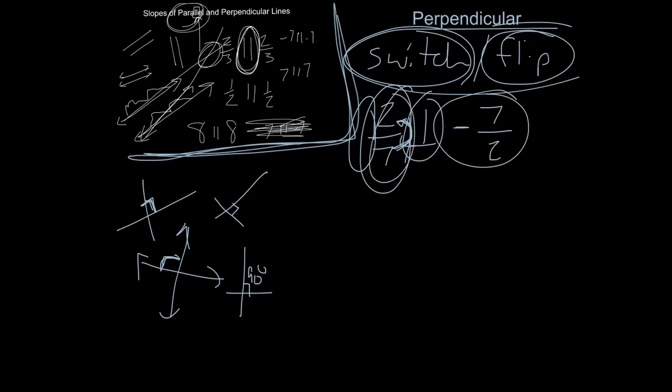And that's perpendicular to that. So let's do some more just to practice. Let's say you got 1 over 3, you want to go perpendicular, switch the sign, it's now negative, switch it over the line, it's 3 over 1. What's 3 over 1 simplify to? Just a negative 3.